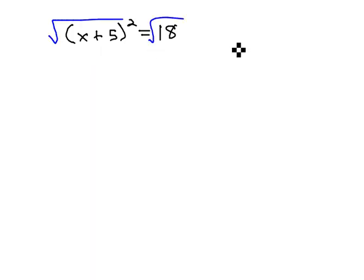We could just take the square root of both sides. Square and square root are inverses, giving us x plus 5 equals. Because we're getting rid of an even exponent, we need the plus or minus.